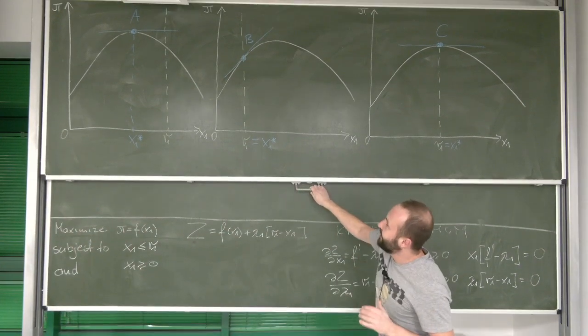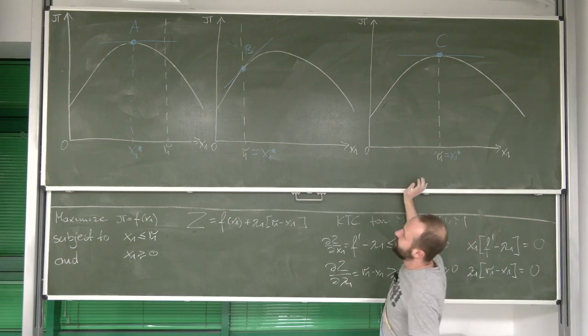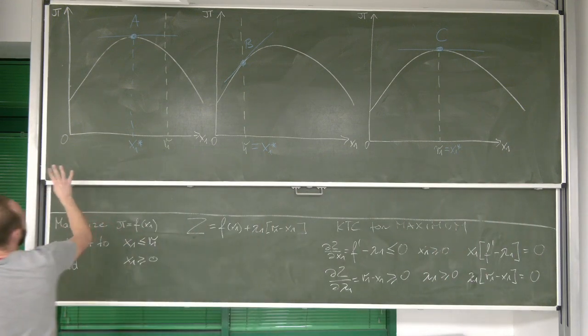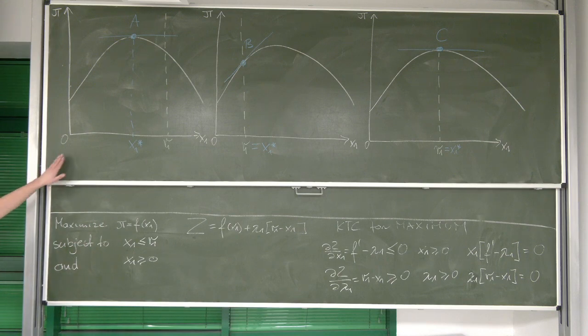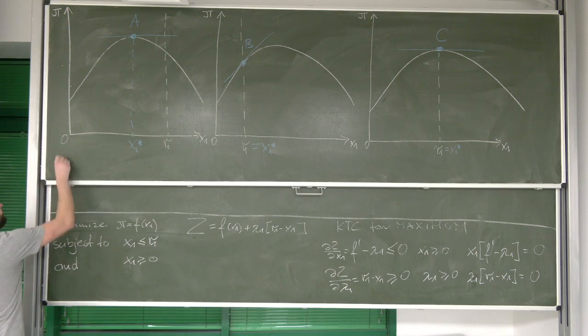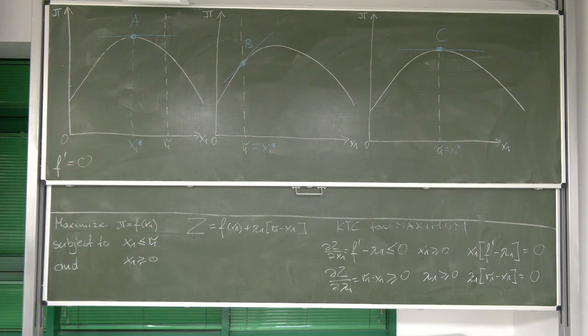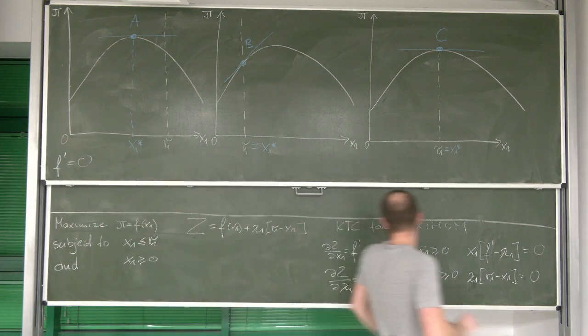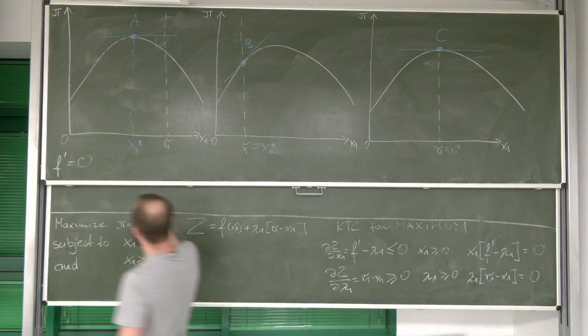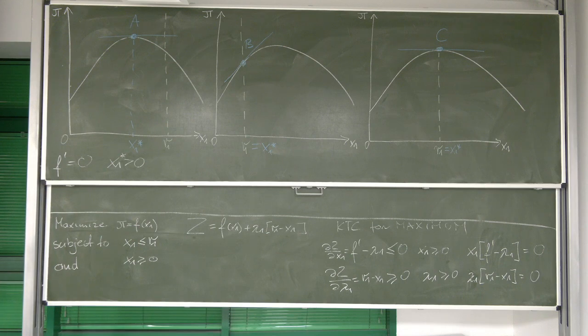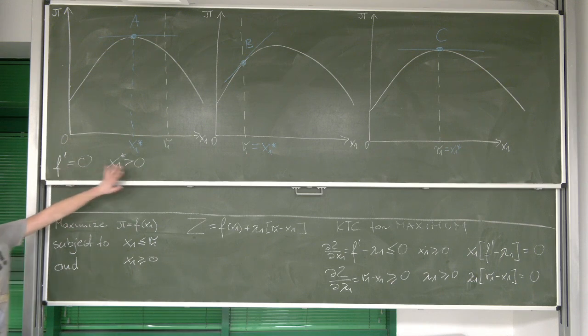So if this is the case, and we see what is happening over here, let me just write down all the information we got. Look, first thing we see is, at maximum, first derivative of the function is equal to zero, right? What else do we see? We see that the maximum x1 is positive. So, before we get to what else we see, what does this imply?